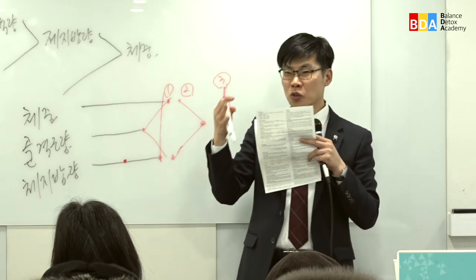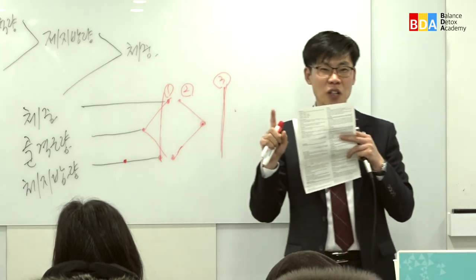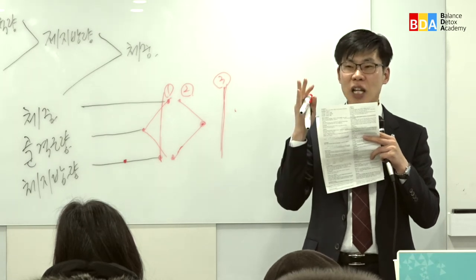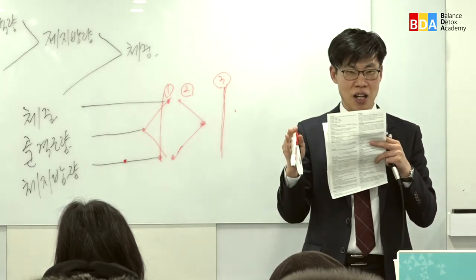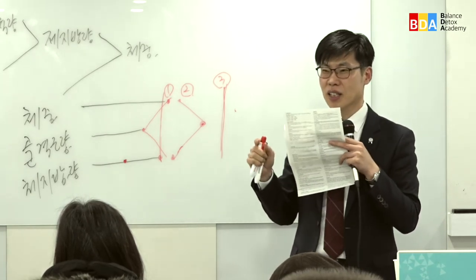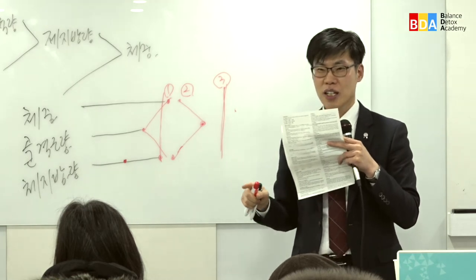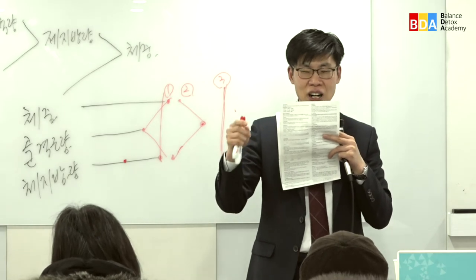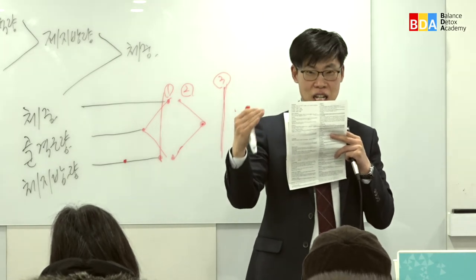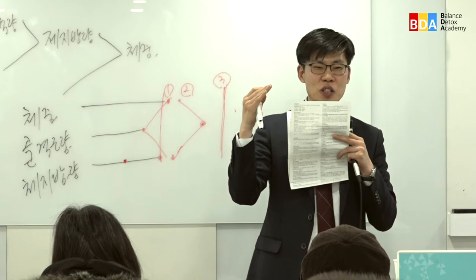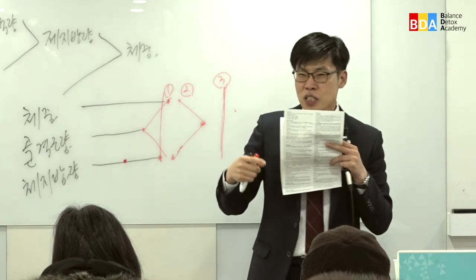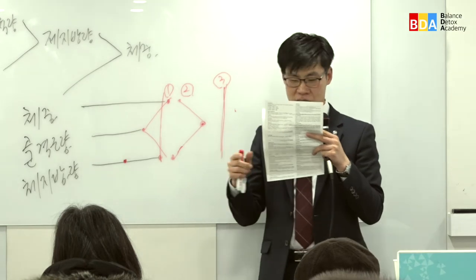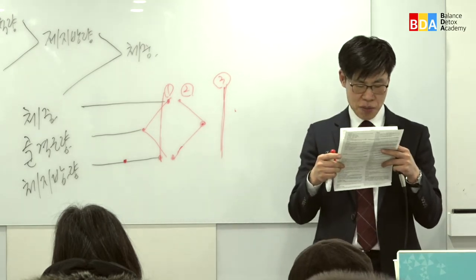유산소 운동보다는 근력운동을 하십시오. 우리 몸의 근육의 약 70%는 하체에 있습니다. 가능하면 하체운동, 스쿼트를 하시게끔 하면 좋습니다. 하루에 하나씩만 늘려나가면서 한계점에 도달하면 거기까지 하시고, 지속적으로 습관적으로 늘려서 할 수 있게끔 해보세요.